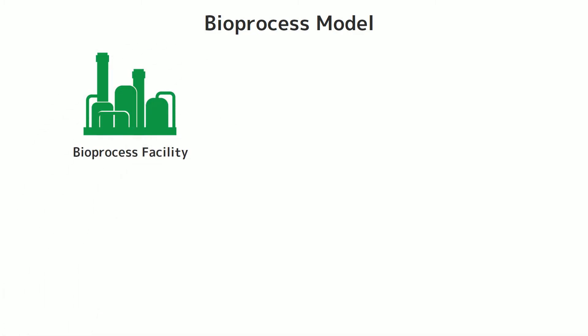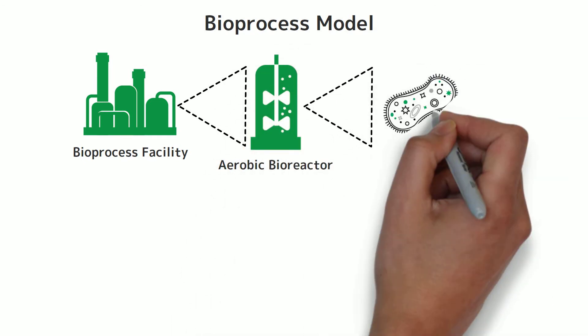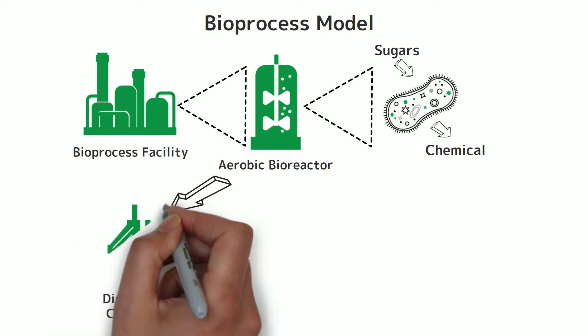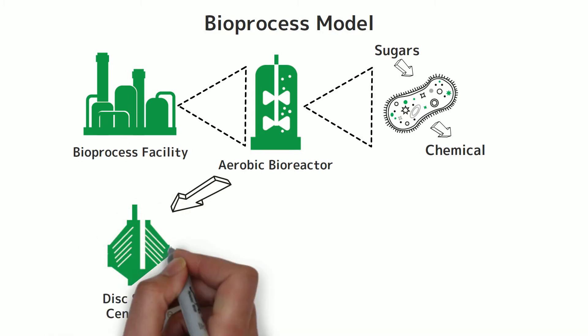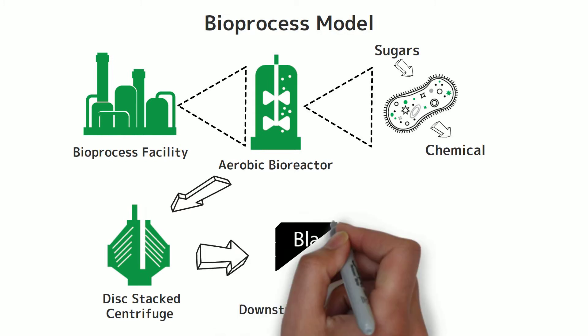At the heart of the TEA calculator is a generalized model of the bioprocess. The bioprocess facility is built upon aerobic fermentation and aerobic bioreactors in which microbes convert sugars to the target chemical in the presence of oxygen. The model assumes a bacterial fermentation. Following fermentation, the fermentation broth containing the target chemical is separated from the bacterial cells utilizing a disc-stacked centrifuge, after which the cell-free broth,